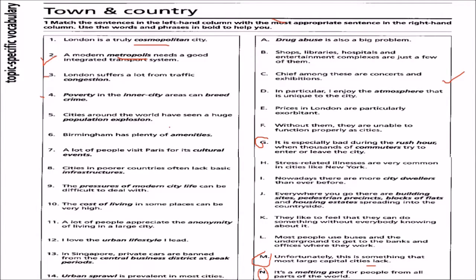Four: poverty in the inner city areas can breed crime. We match it with A — drug abuse is also a big problem.